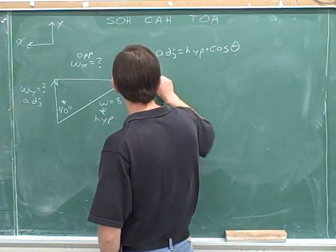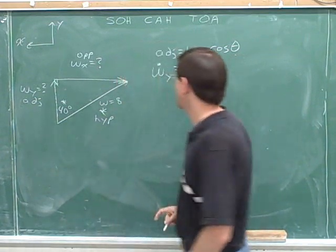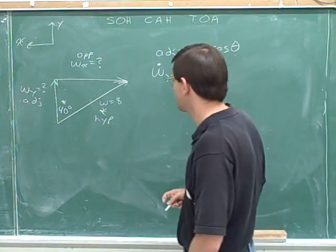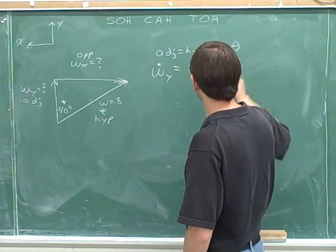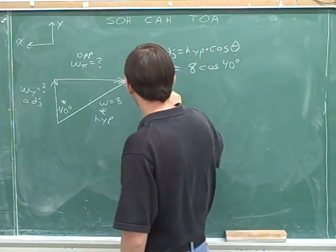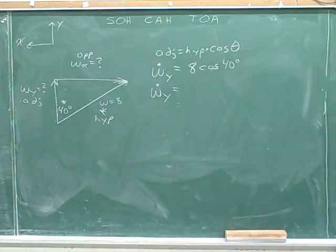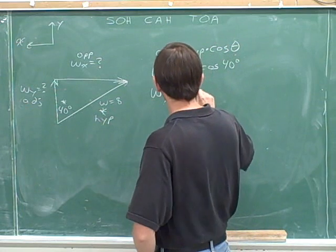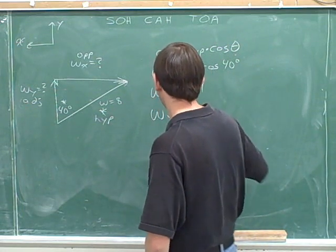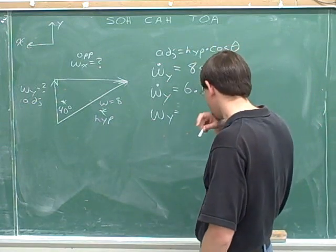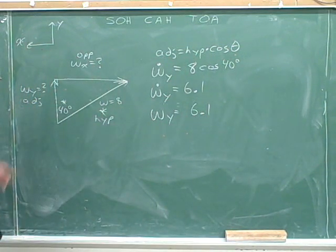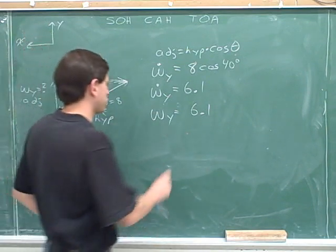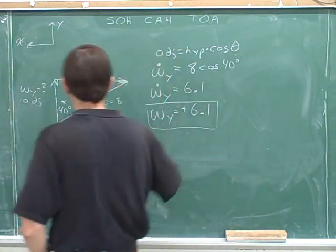Our adjacent side here is W sub Y. But we're going to just plug in a magnitude for that, because we just want the length of the adjacent side. The hypotenuse was 8. And the angle we were given was 40 degrees. So we need to use our calculator to find W sub Y. Well, 8 times the cosine of 40 is 6.1. Now we still have to find the sine component. Our Y component is pointing up, and up is the positive direction. So the Y component is positive 6.1.